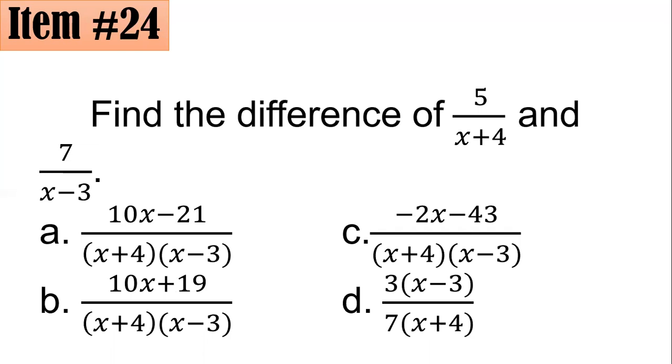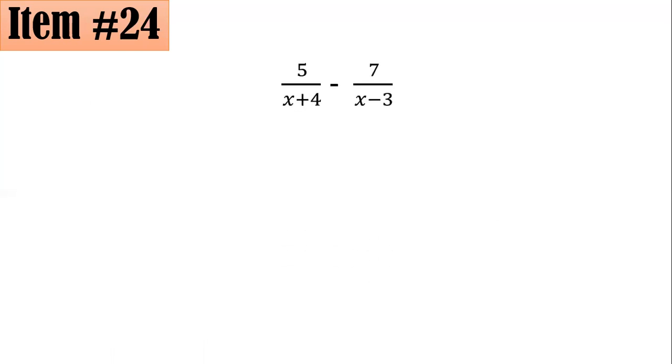So for this one, in subtracting them, you could see that they are dissimilar in the sense that their denominators are not the same. And if that happens, we have to look for their LCD. In this case, their LCD will be the product of (x + 4) and (x - 3), because if you have two fractions whose denominators have no common factor except one, then their product of the denominators will be the LCD.